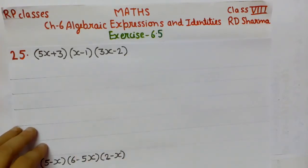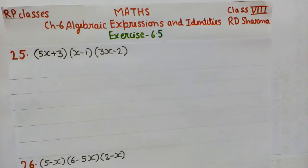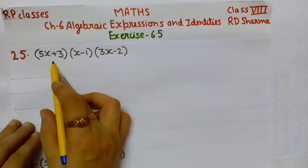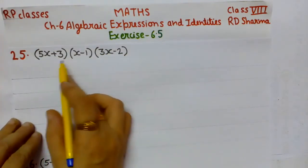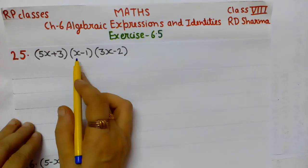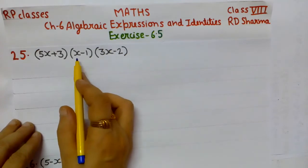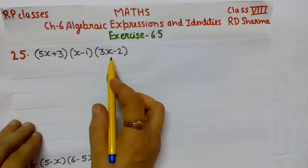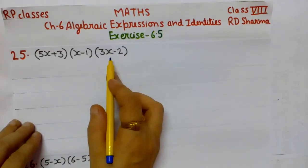For this question, first of all we use associativity of multiplication. We multiply the 1st and 2nd bracket first, and then multiply the answer to the 3rd bracket.